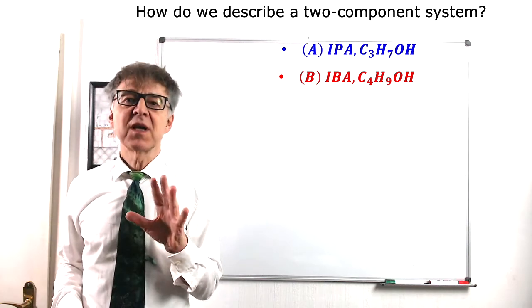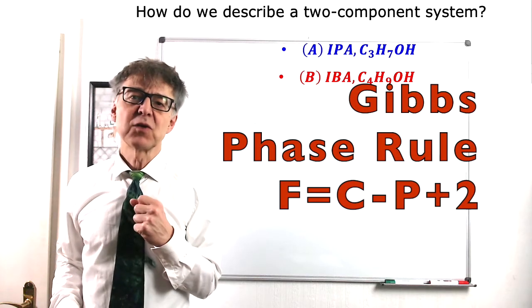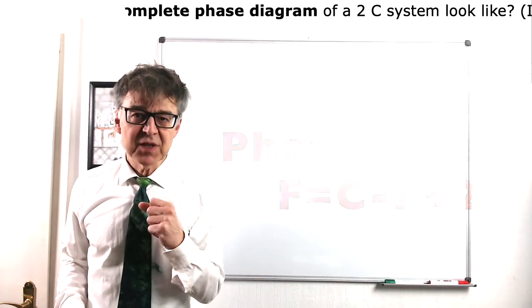As you may remember, Gibbs phase rule demands to set three and only three parameters to unambiguously describe a two-component system.